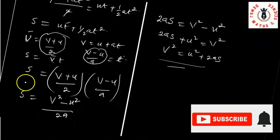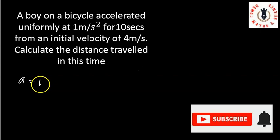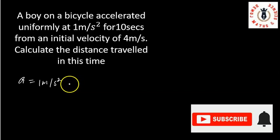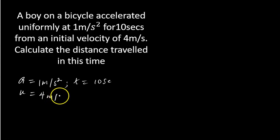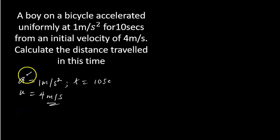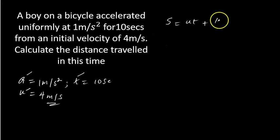Now let's take the example. Suppose there's a boy on a bicycle accelerated uniformly at 1 meter per second squared. His acceleration A = 1 m/s². He did that for a time of 10 seconds, so T = 10 seconds, from an initial velocity U = 4 meters per second. We're asked to calculate the distance traveled in this time. We have three equations, and if you look at this question closely, you'll see that I have acceleration, time, and initial velocity — this reminds me of the second equation of motion, S = UT + ½AT².